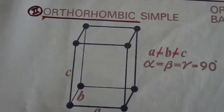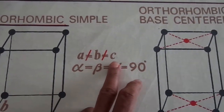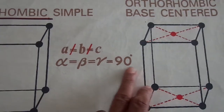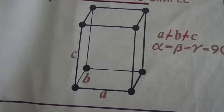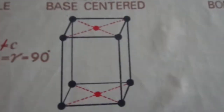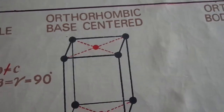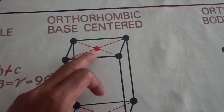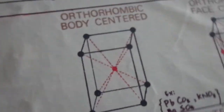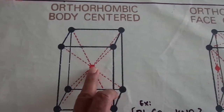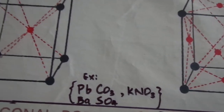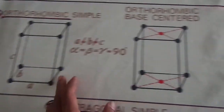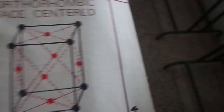Now moving on to the second type: the orthorhombic crystal system. Here A is not equal to B which is not equal to C, and alpha, beta, gamma are all equal to 90 degrees. In this case: simple — only corner atoms are present; base-centered — atoms are present at the center of the floor and ceiling in addition to corner atoms; body-centered — an atom is present inside the body; and face-centered — half of an atom is present in each face. So in orthorhombic, there are four types.